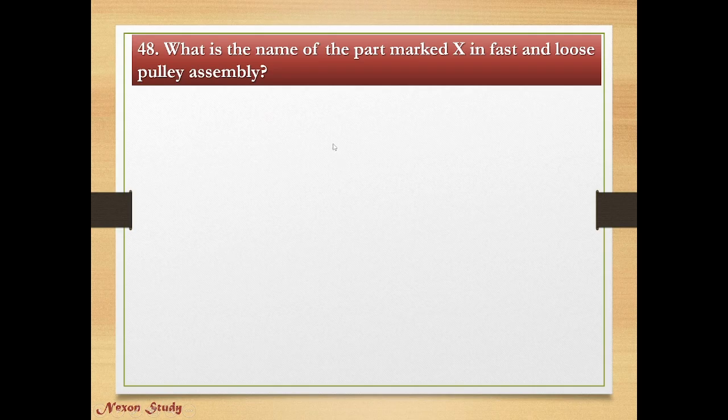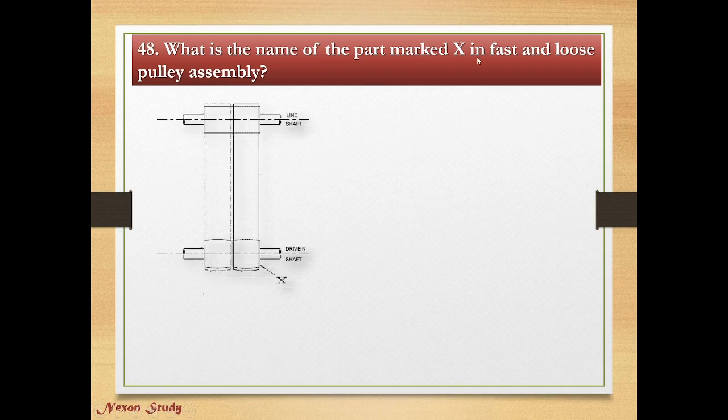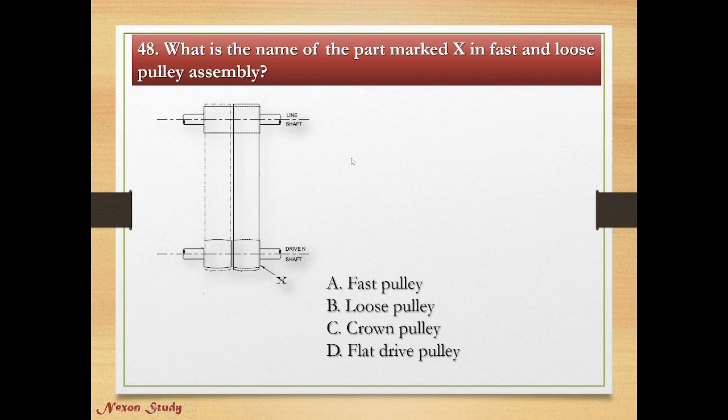Question: What is the name of the part marked X in a fast and loose pulley assembly? Options: fast pulley, loose pulley, ground pulley, flat drive pulley. Correct answer is ground pulley.